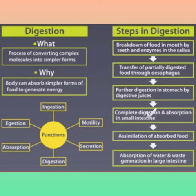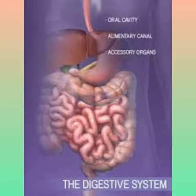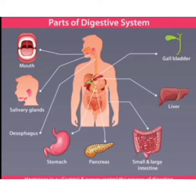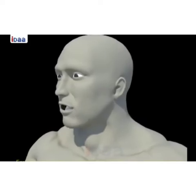The next steps are digestion in the small intestine, then assimilation, and then excretion. The digestive system is involved in the digestion of food. Parts of the digestive system are: mouth, salivary glands, esophagus, stomach, pancreas, small intestine, large intestine, liver, and gallbladder.